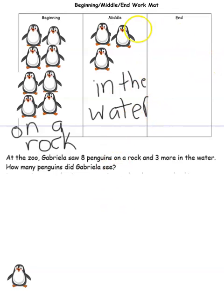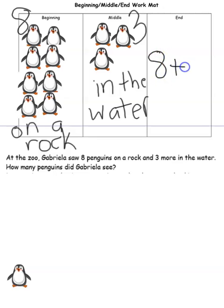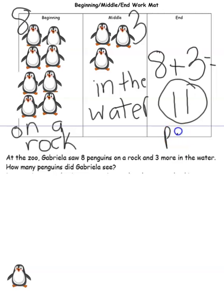What's happening at the end of our story? Gabriella sees all of the penguins and wants to know how many she saw in all. She saw eight on the rock and three in the water. We need to know how many she saw in all. If I have eight and I add three more to it — eight, nine, ten, eleven. So we saw eleven penguins in all.